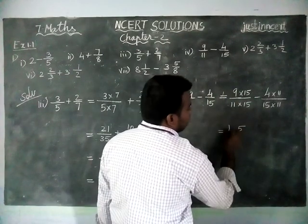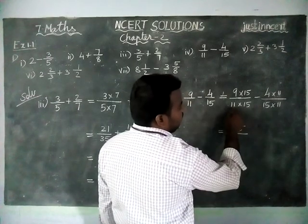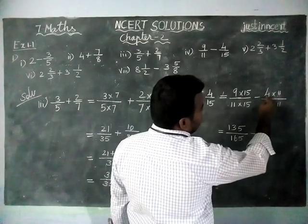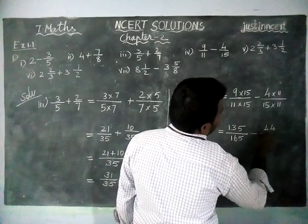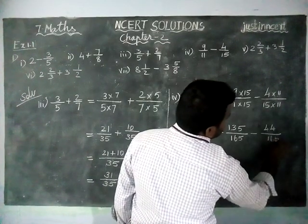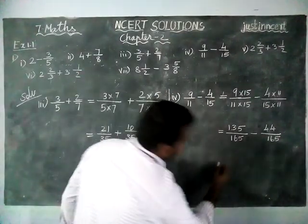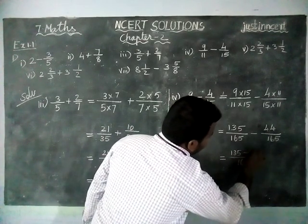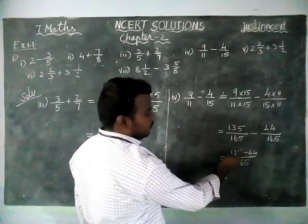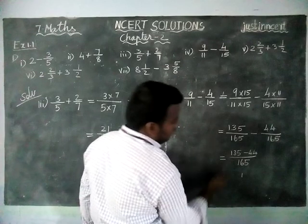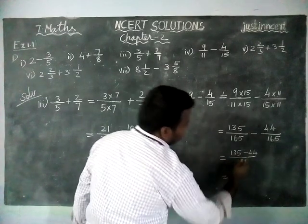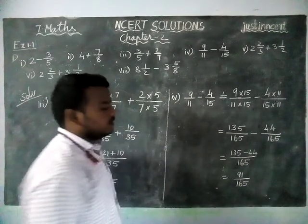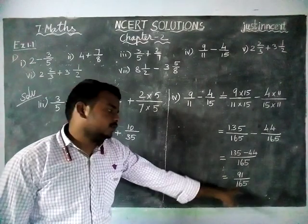9 fives, remaining 4, 1 nine is 9, 9 plus 4 is equal to 13. So 135 divided by 11 fifteens are 165. Next minus 4 elevens are 44 divided by 15 elevens are 165. Now denominators are equal. So common denominator 165. And here 135 minus 44: 13 minus 4 is equal to 9. So 91 divided by 165. And here this is also proper fraction, so we cannot divide it into mixed fraction.